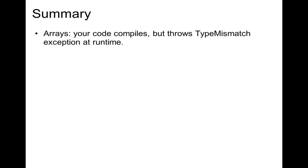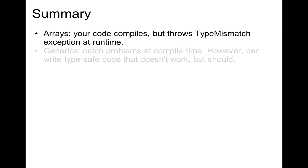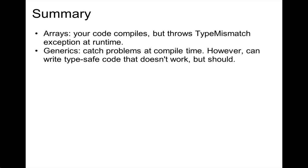In summary: with arrays your code will compile but you'll throw a type mismatch exception at runtime. That's not great, because you'd rather have the compiler catch that at compile time. With generics, we can catch the problems at compile time. However, it's possible to write type-safe code that doesn't work, but should.